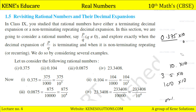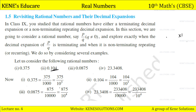The shortcut: count how many decimal places there are after the decimal point — one, two, three — so we write directly upon 1000. If there are four decimal places, we write upon 10,000. So the representations are 375 upon 1000, 875 upon 10,000, and 233408 upon 10,000.